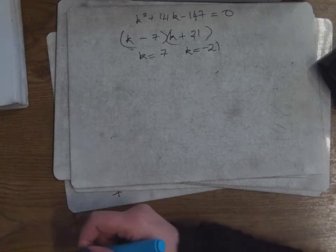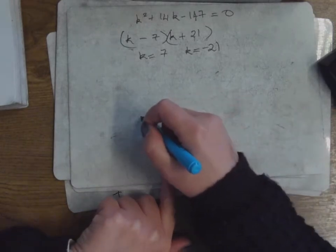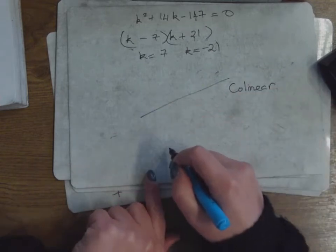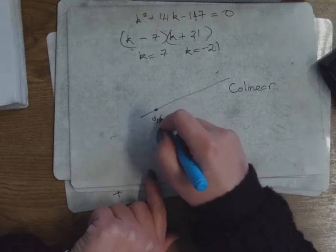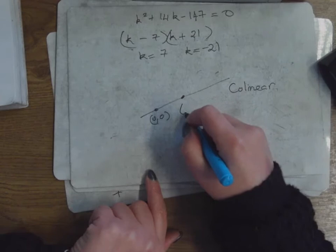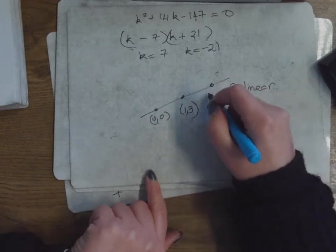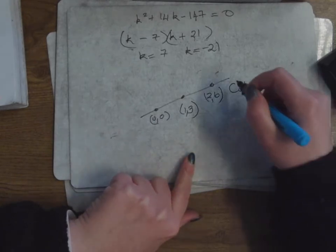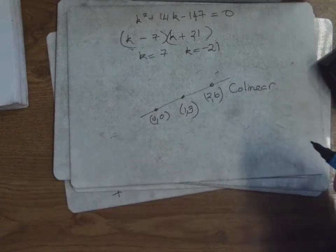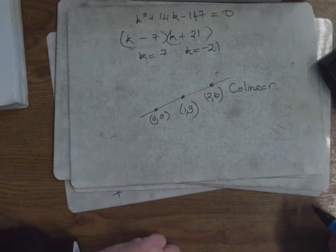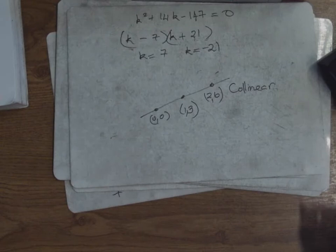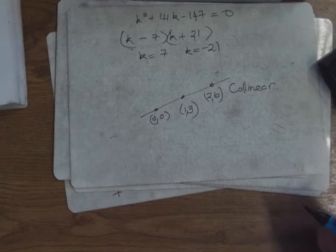You got the area to be zero — and that means the points are collinear, right? Collinear means they're all on the same line, so there's actually no triangle. If you draw the points — zero, one, three, and two, six — they'd all be in a line. So when you get the area of the triangle as zero, it means they don't make a triangle; they're collinear — they're all on the same line. Is there two L's in collinear? Yeah, two L's — right.